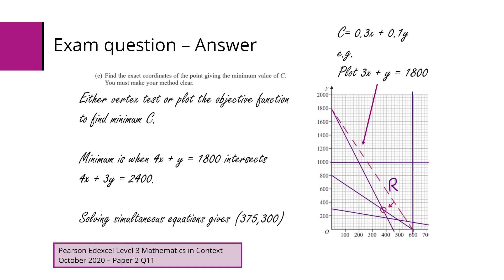Here we can see I've plotted 3x plus y equals 1800. If you set the C to a value, you can then plot that objective function. Because we want to minimise it, we want to be heading towards the origin there. So we can see that circled point is where our minimum value lies. We can then solve those two equations simultaneously to give our values 375 and 300 for x and y.